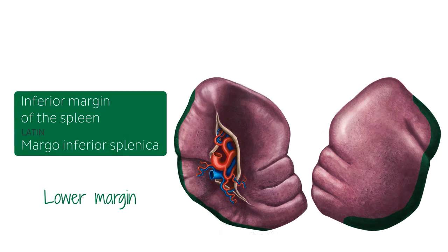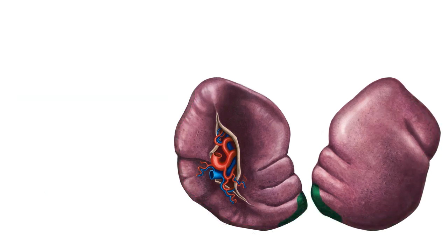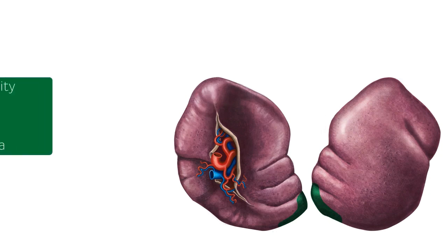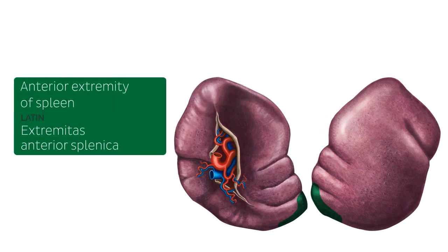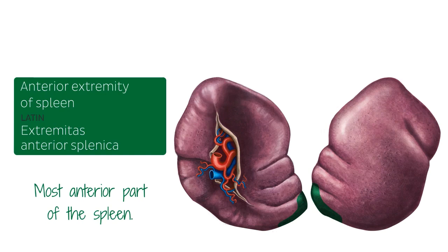Now let's take a look at the two extremities of the spleen, starting with this one that you now see highlighted. This is the anterior extremity of the spleen — basically the most anterior part of this organ seen here highlighted.